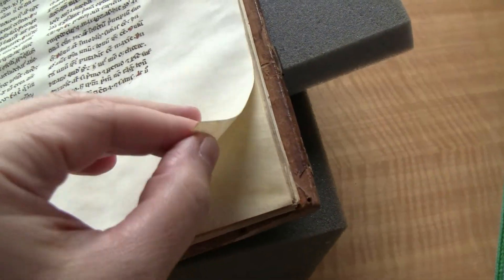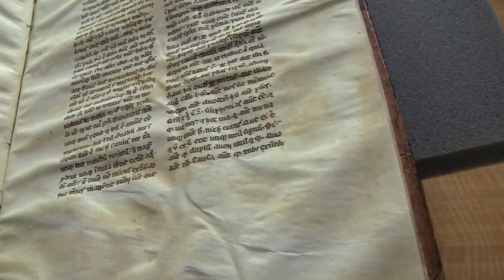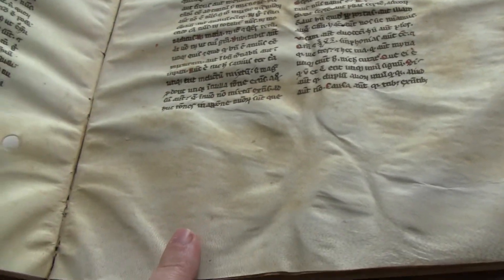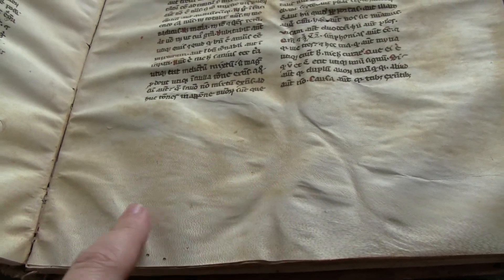And again, we're looking at very creamy colored hair side and then a sort of yellow flesh side. Here we're seeing some hair follicle patterns here. And again here, quite yellow with the hair follicles.